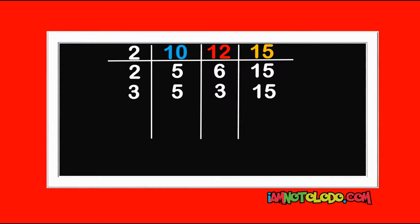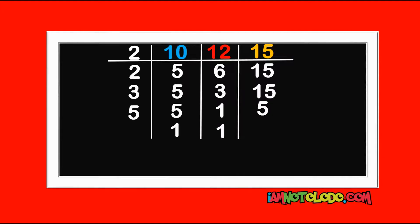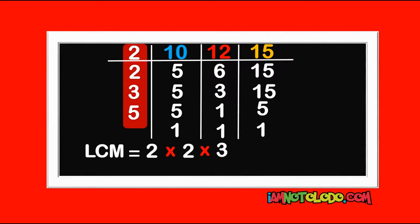3 cannot go into 5, so we write down our 5. 3 can go into 3 — that is 1. 3 in 15 is 5. Now only 5 can divide the remaining numbers. 5 in 5 is 1, this is already 1, 5 in 5 is 1. So our LCM equals 2 times 2 times 3 times 5, which equals 60. Do you understand? Good.